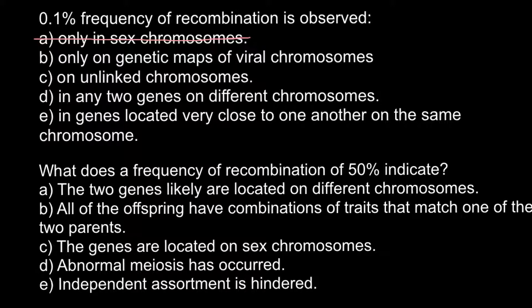Answer B: only on genetic maps of viral chromosomes. This is also an incorrect answer because viral genomes consist of one chromosome — it can be circular or linear — but in order for recombination or crossing over to happen, we need two chromosomes.